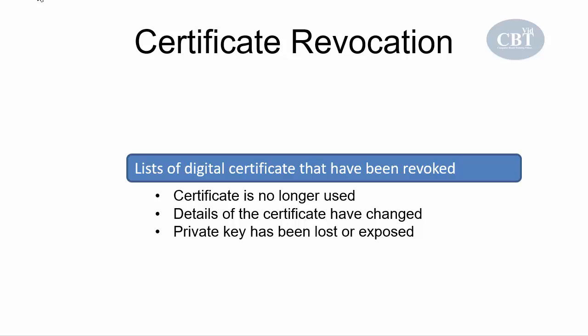The concept is similar to a driver's license. If someone changes their name or address, they need to get a new driver's license because the current one has incorrect information. So we need an entity to take care of these situations. Certificate revocation is the entity that handles that — people can refer to it to find out if a certificate is valid or not.